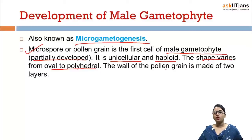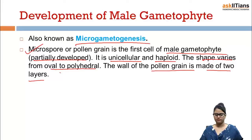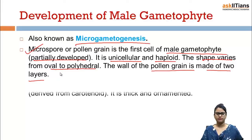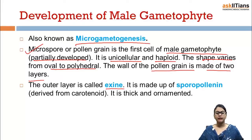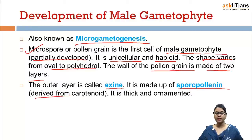The wall of the pollen grain is made up of two layers. The outer layer is called the exine, and it is made up of sporopollenin, which is derived from carotenoid. It is thick and ornamented.